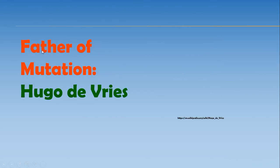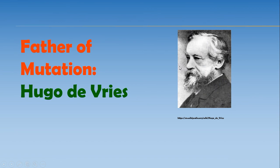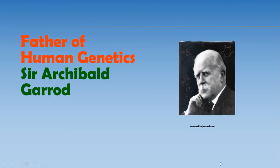Next is the father of mutation, Hugo de Vries. He explained that there can be sudden changes in genes. These changes are called mutations and they can be inherited from one generation to the next. The next father is the father of human genetics, Sir Archibald Garrod. He discovered that there can be inborn errors of metabolism due to genes.